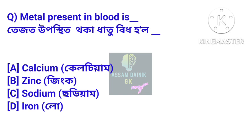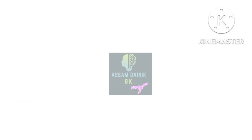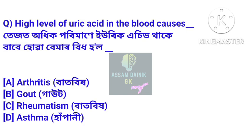First question: Which metal is present in blood? The metal present in blood is iron. Iron is the only metal found in blood.